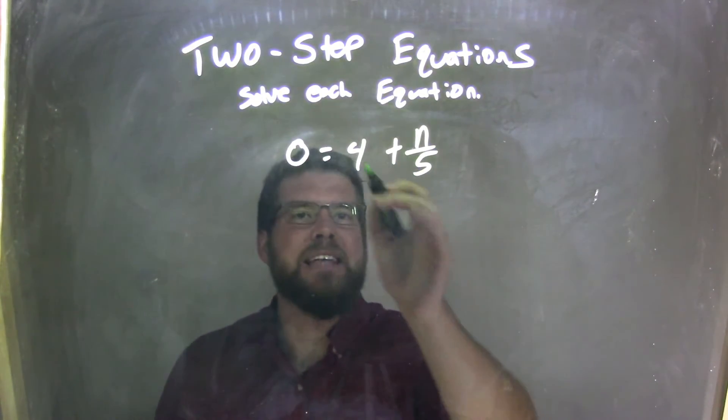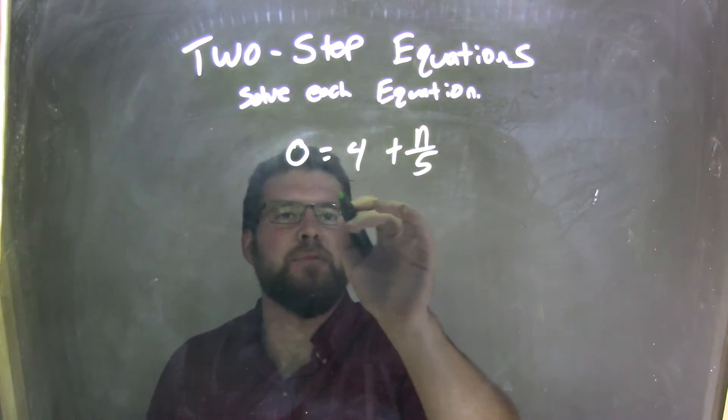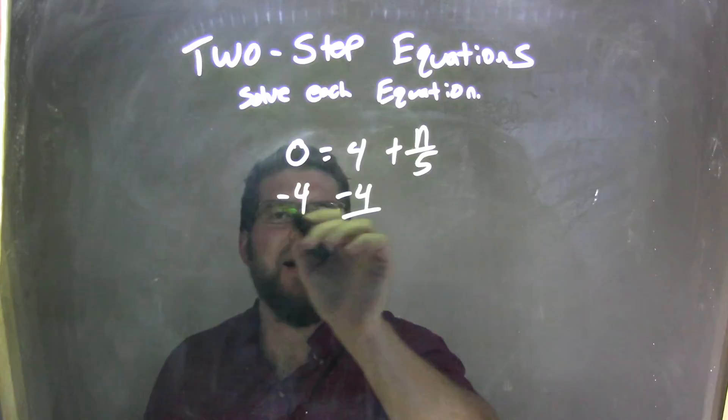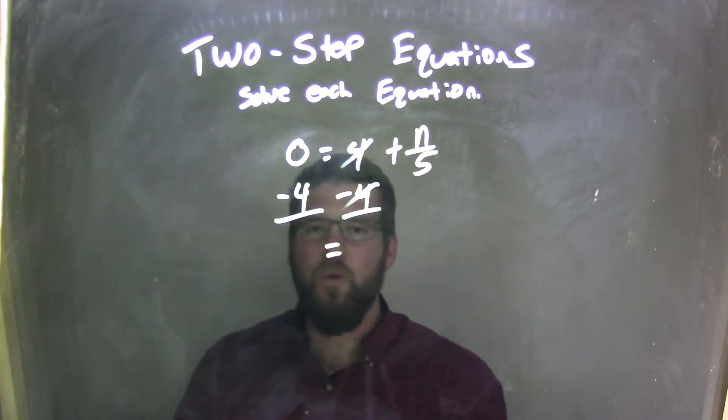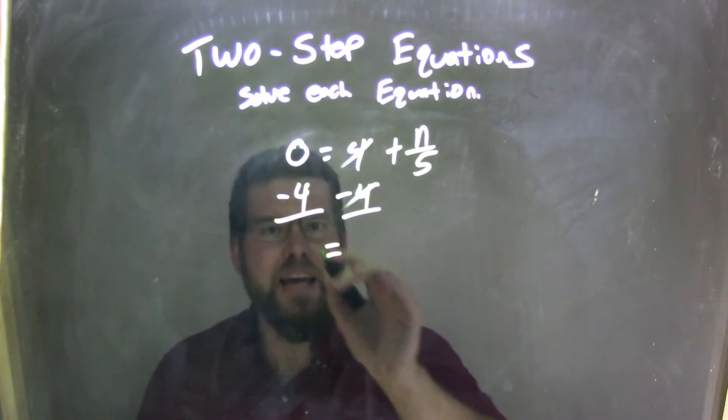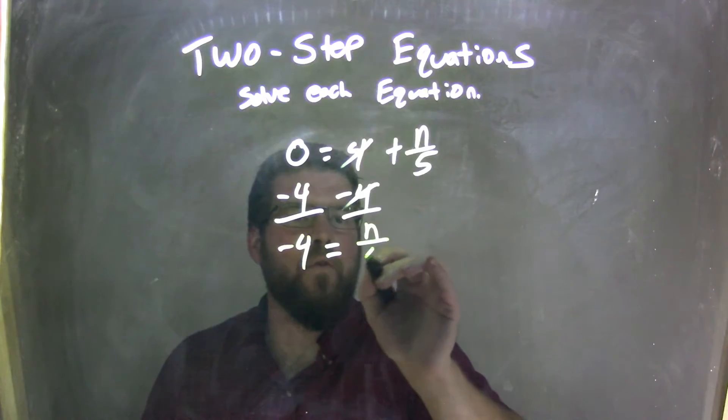Well, my first step here is that 4. I need to get rid of it. It's a positive 4, and we're adding it. Opposite of that is subtracting, so I'm subtracting 4 from both sides. These 4s cancel, but now I'm left with 0 minus 4. 0 minus 4 is negative 4, and I bring down the n over 5.